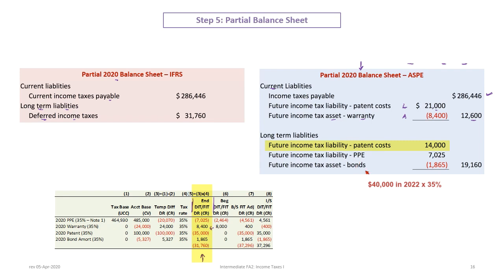Under ASPE, current future income tax liabilities and assets are netted out — the $21,000 liability minus the $8,400 asset shows a net current liability of $12,600. For long-term, the remaining $40,000 in patent costs times 35% plus property, plant and equipment and the bond result in a net long-term liability of $19,160. Adding $12,600 plus $19,160 still totals $31,760 — the same combined ending balance as under IFRS.